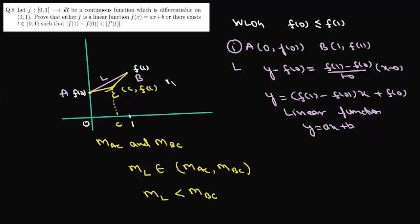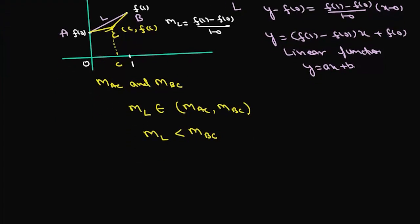Now slope of this line is (y₂ - y₁)/(x₂ - x₁), so it will be (f(1) - f(0))/(1 - 0). So we can write: slope of BC is greater than slope of this line, which is f(1) - f(0).